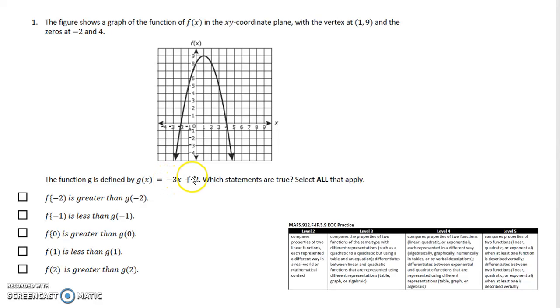The function is defined g(x) equals -3x plus 2. Which statements are true? So we have two functions: we have the graph and we have an equation. Take a moment to look at that information and come up with an answer.